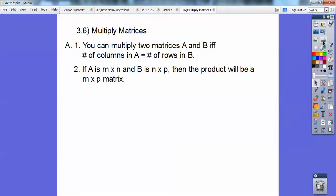So if A is an m by n matrix and B is an n by p matrix, notice this number and this number match up. So the number of columns in A matches the number of rows in B, then the product will be an m by p matrix. Okay, so here's the rule right here. If these numbers match up right there, then the product is always going to be this number by this number right here.